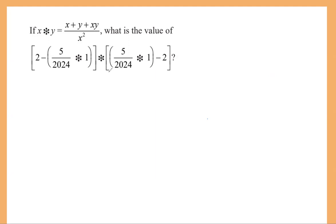The question is kind of straightforward, but at the same time, the numbers we are given don't look fun. When you choose 5 over 2024 for X and plug it in, you get 5 over 2024 plus Y equals 1. You can just plug it in, but it's going to be a bit messy, and that shouldn't be the approach we should be using.